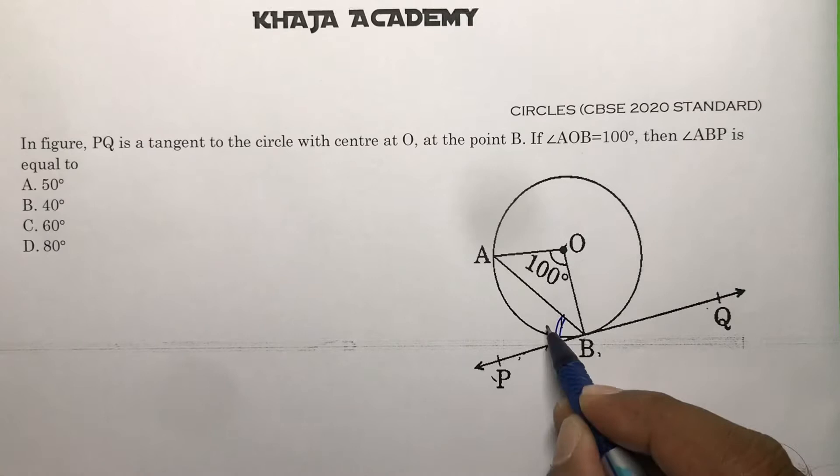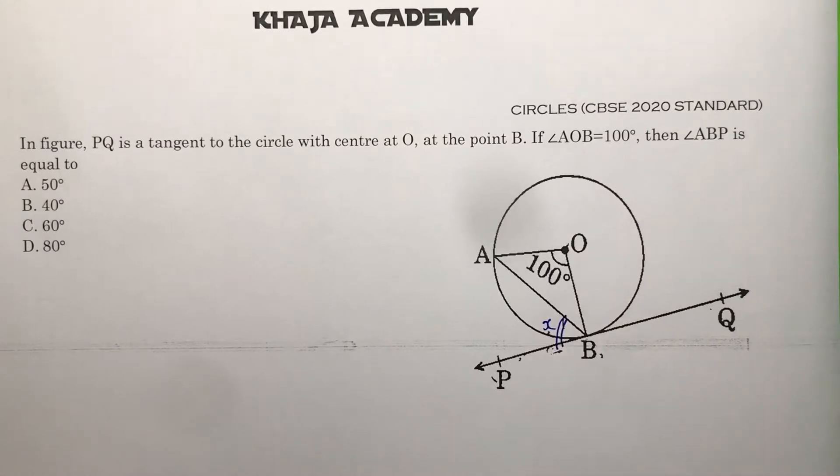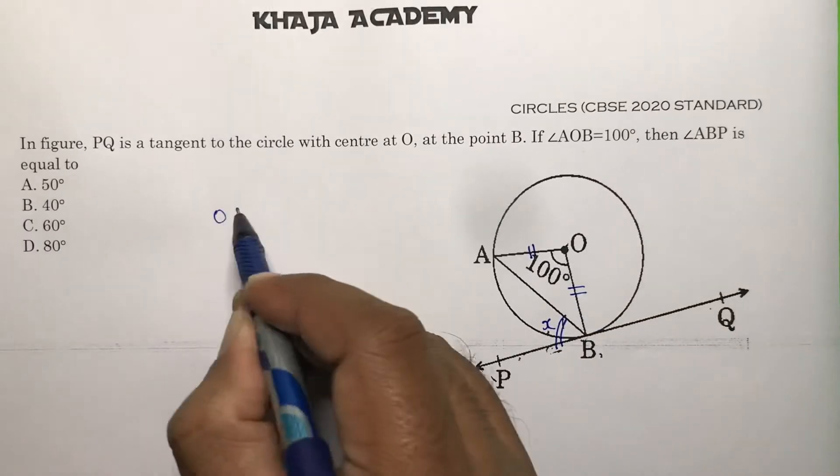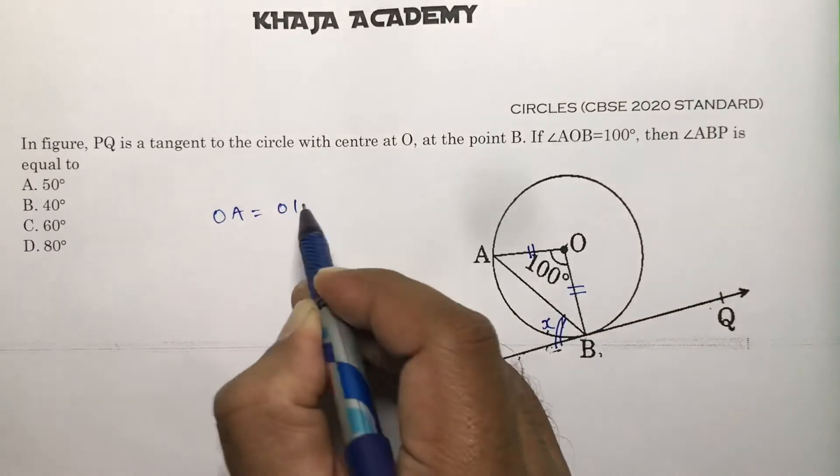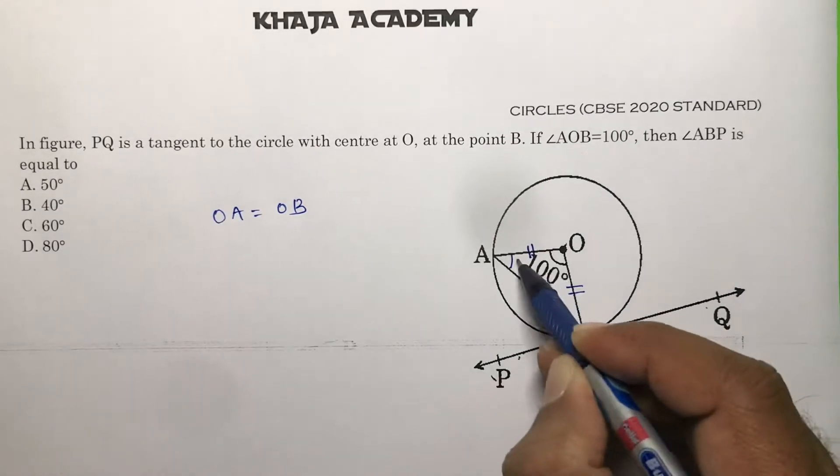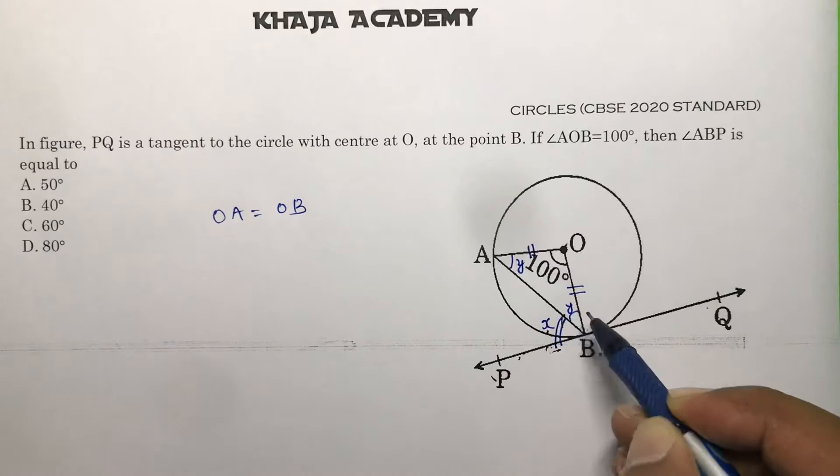I'll consider this angle as X. Now, since OA equals OB, according to the isosceles triangle property, these two angles will be equal. So I'll call them Y and Y.